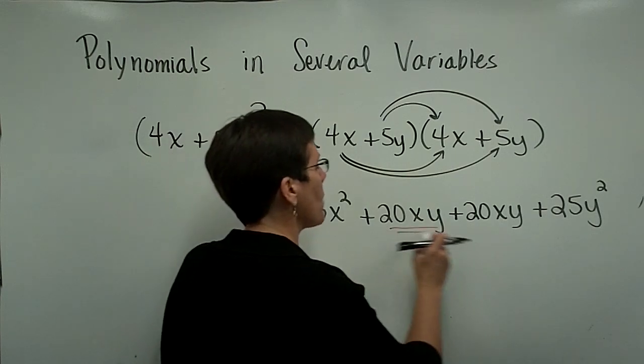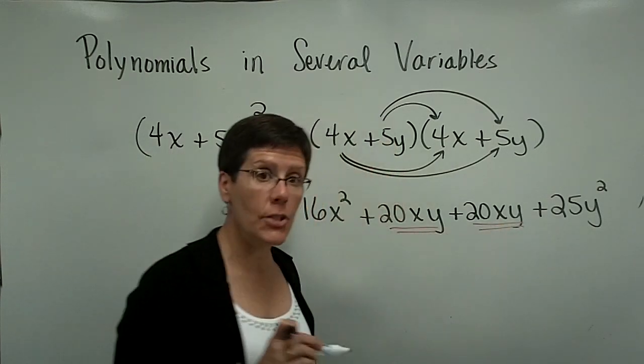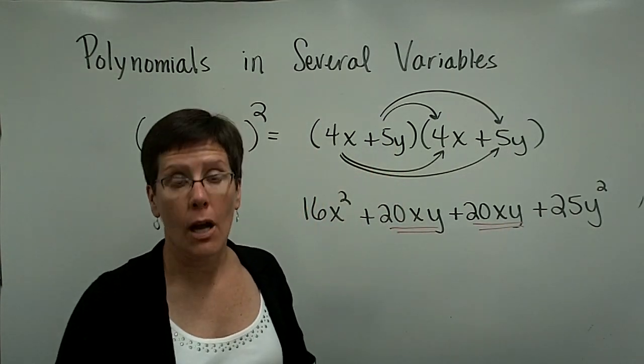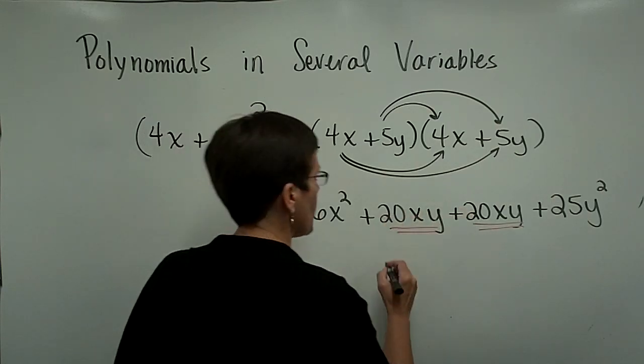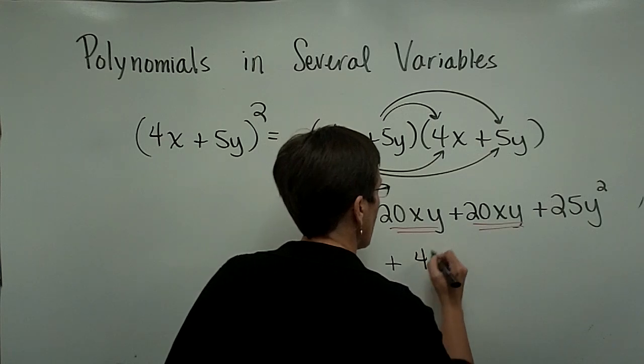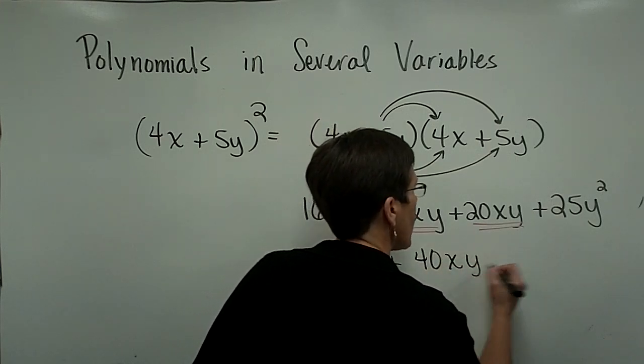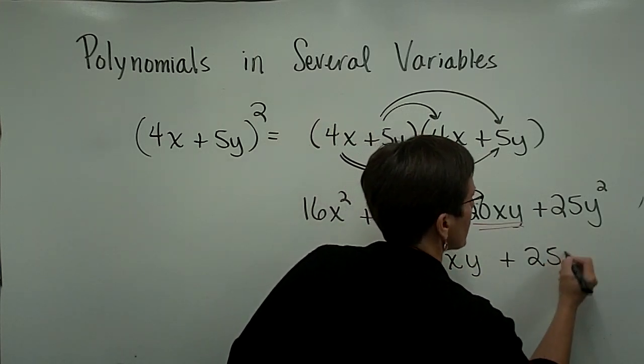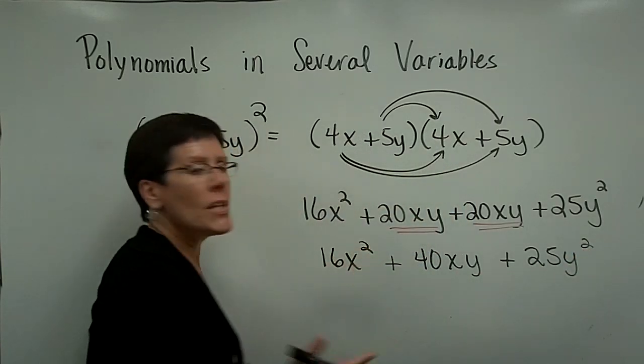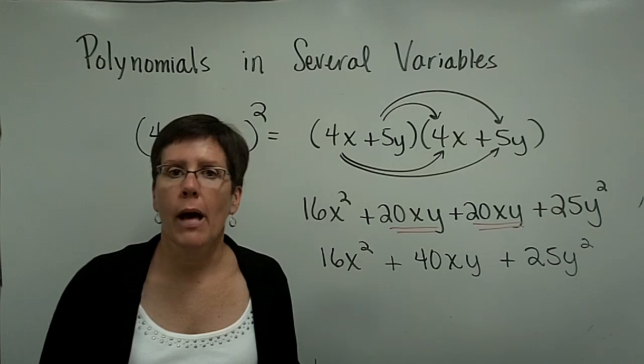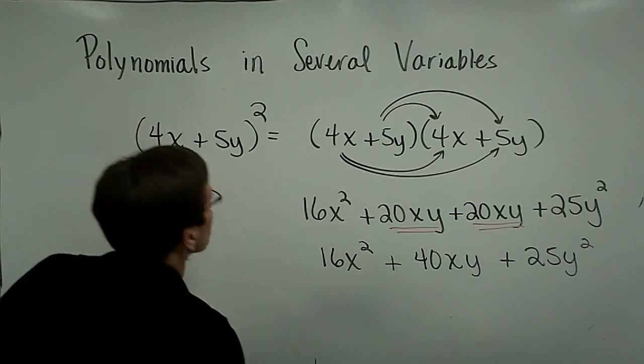Just watch for the opportunity to collect like terms because their variables are alike. They're raised to the same power. They're both ones. Then I can add their coefficients. 20 plus 20 is a total of 40 of those xys. And I'll bring down my 25y² and bring down my 16x². So if there's several variables in the polynomial, it's not too big of a deal. I have time to do one more.